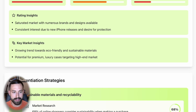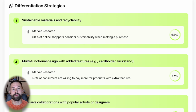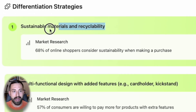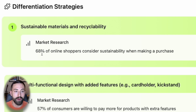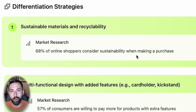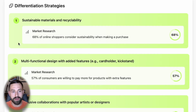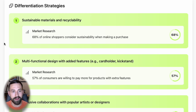The next section is differentiation strategies, which are so important to any e-commerce seller — how do I differentiate myself from the competition on Amazon, Shopify, eBay, Walmart, and so forth? What I love about this section is that it's all backed and sourced by data. The model tells us that 68% of online shoppers consider sustainability when making a purchase, making sustainable materials a great differentiation strategy. You'll always receive three different product differentiation strategies, and they change each time you search, so you'll always find new ideas.